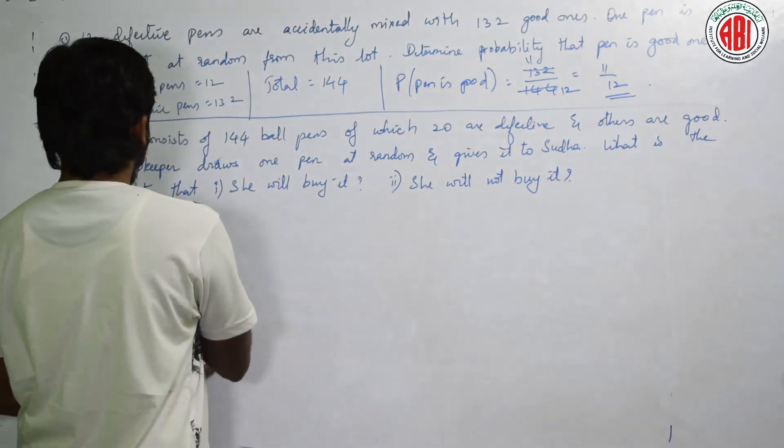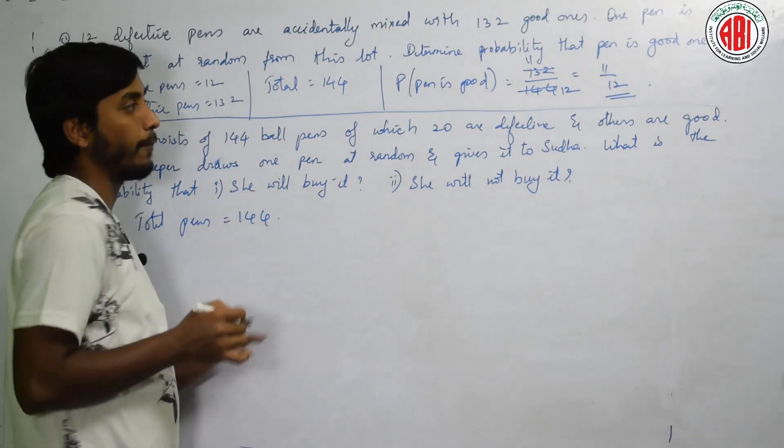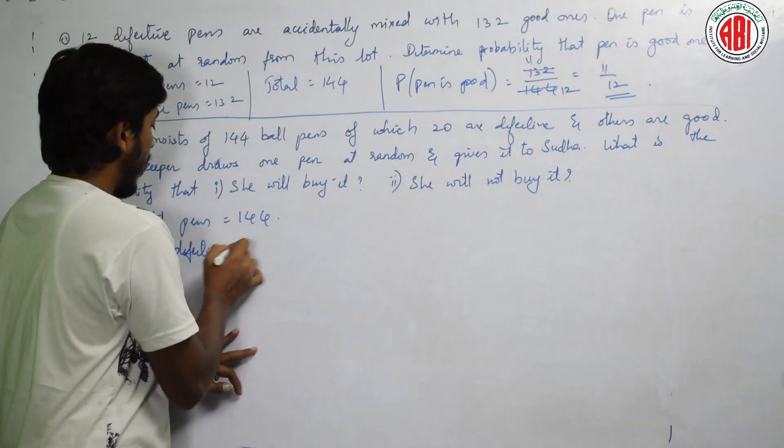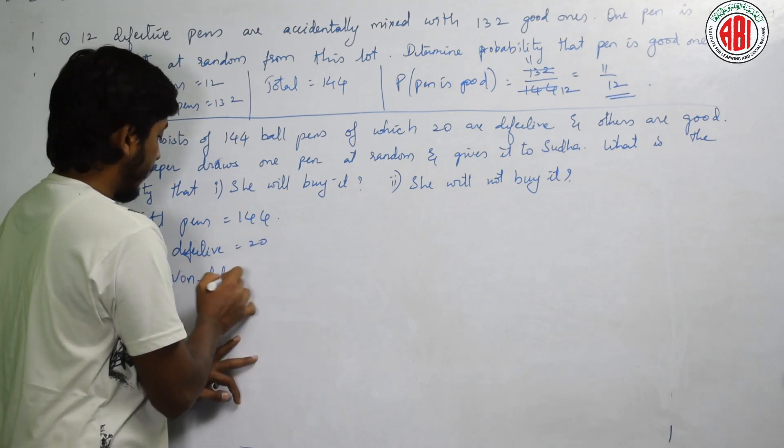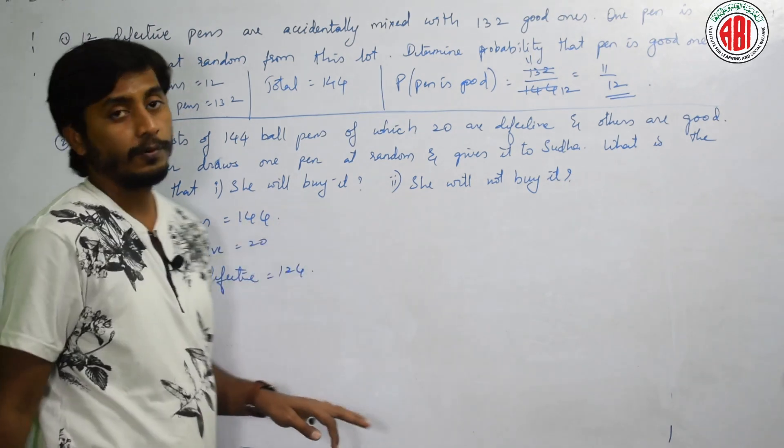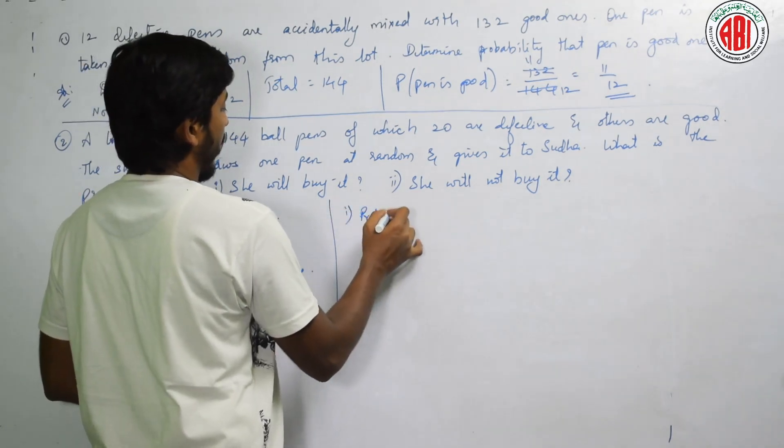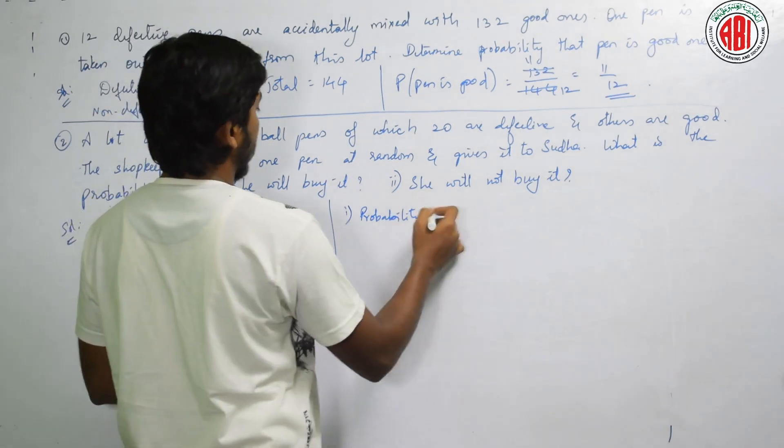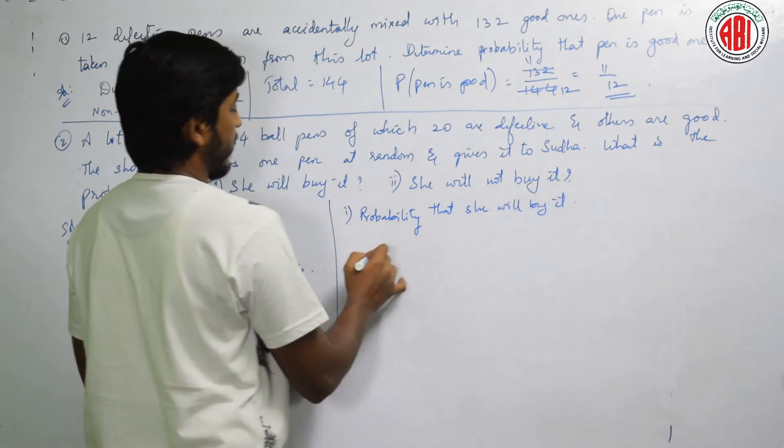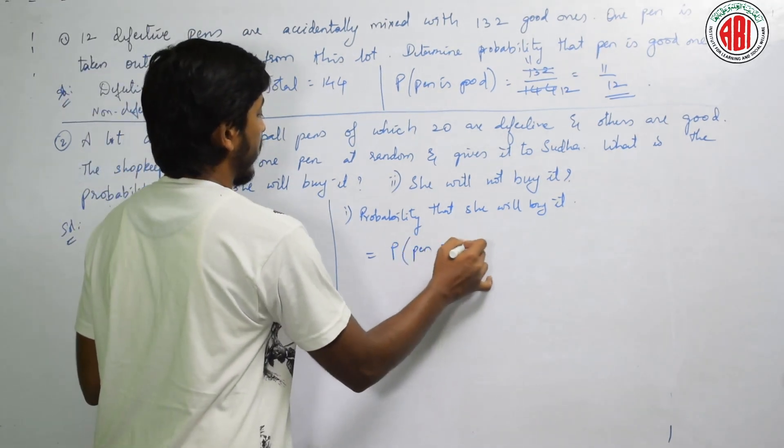See here, total pens is equal to 144. Defective are 20, non-defective are 144 minus 20 is 124. Now tell me what is the probability? Probability that she will buy it, that is equal to probability of good pen. That is, pen is good.